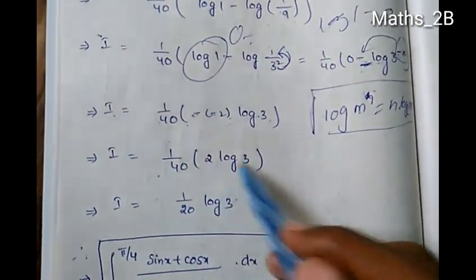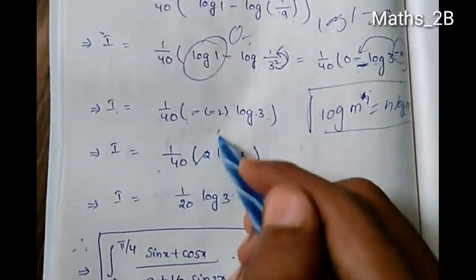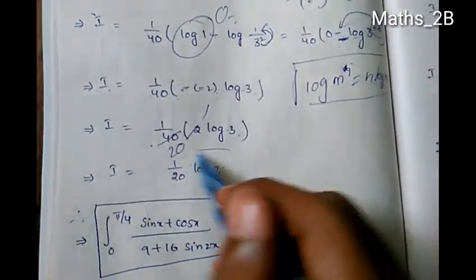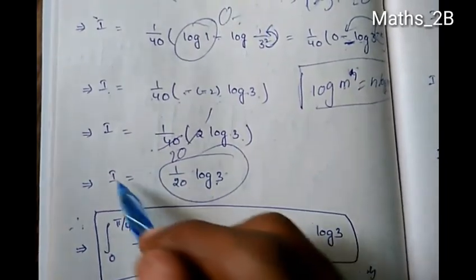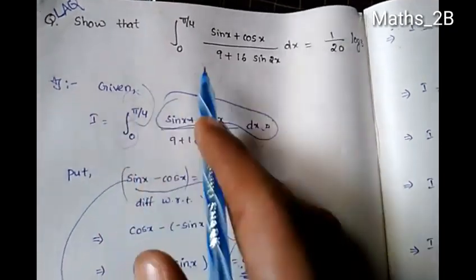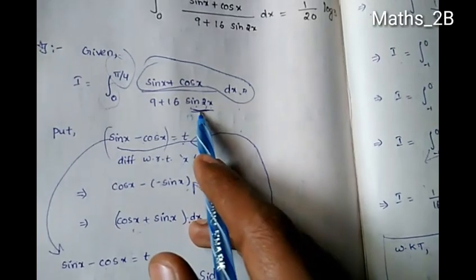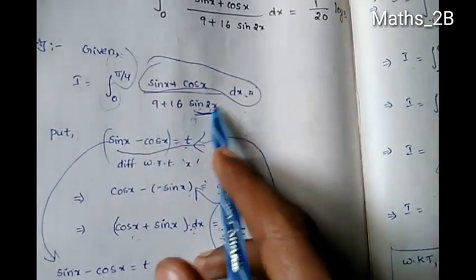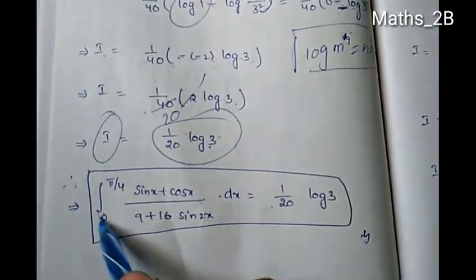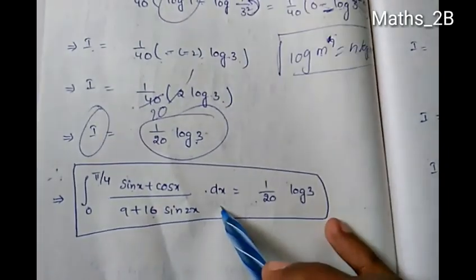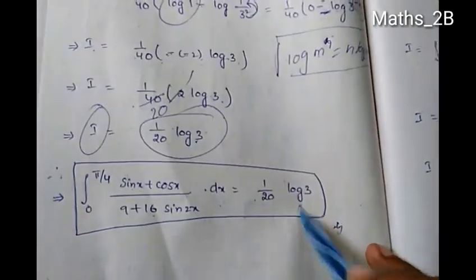Therefore I equals 1/20 · log 3, which proves that the integration from 0 to π/4 of (sin x + cos x)/(9 + 16·sin 2x) dx is equal to 1/20 · log 3.